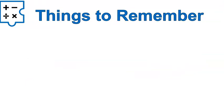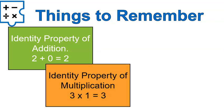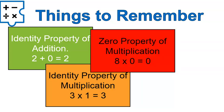A couple of things to remember: the identity property of addition is adding zero to a number; the identity property of multiplication is multiplying a number times one; and the zero property of multiplication is multiplying a number times zero. I hope that lesson was helpful for you. Go ahead and practice identifying those properties using the worksheet. Good luck, and have a wonderful day!